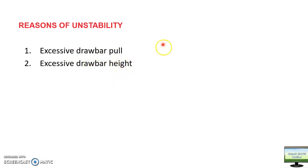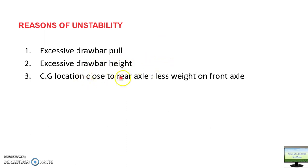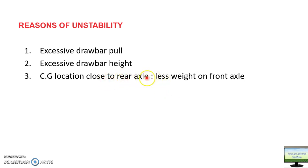Number two is excessive drawbar height — if the drawbar height is very high from the ground, the tractor becomes unstable. Number three is CG location very close to the rear axle. From the weight distribution formula, if the distance of CG from the rear axle center is very small, very little weight comes on the front, making operation unstable.